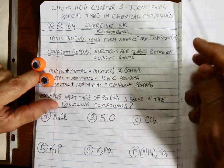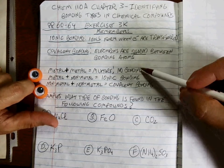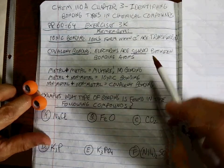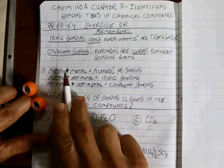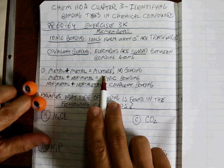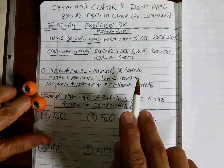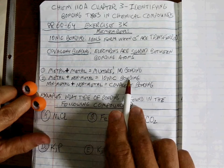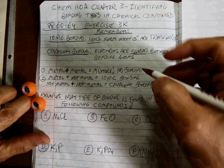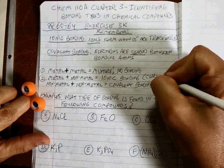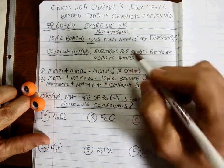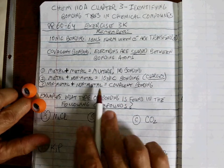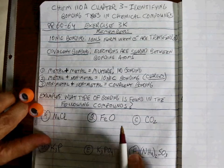There's a simple formula for deciding what kind of bonding is going on. Metal plus metal makes a mixture — no bonding, just mixing them together. Metal plus non-metal makes ionic bonding, which means charges are involved due to ions. Non-metal plus non-metal makes covalent bonding, where you have sharing of electrons.